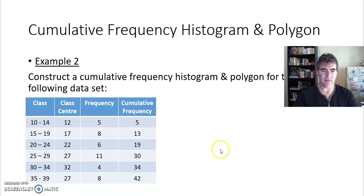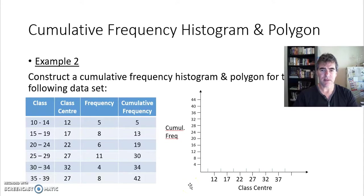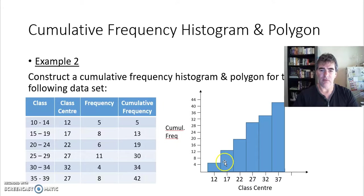Okay, so let's set up our graph. So we need our horizontal and vertical axes along there. So my class centers along the horizontal, my cumulative frequency up the vertical, remembering to choose an appropriate scale there, so I don't end up with a really tall graph or one that's way too short to be able to recognize differences. So when we do that, we end up with our cumulative frequency histogram. Our class center of 12 has a cumulative frequency of 5. My class center of 17 has a cumulative frequency of 13.